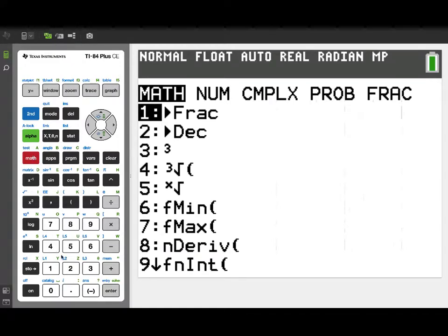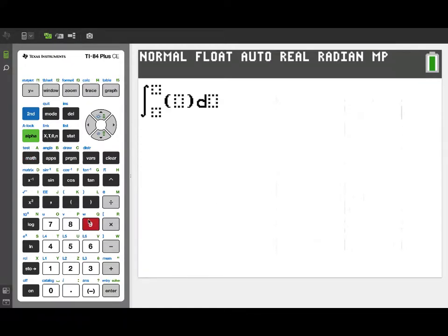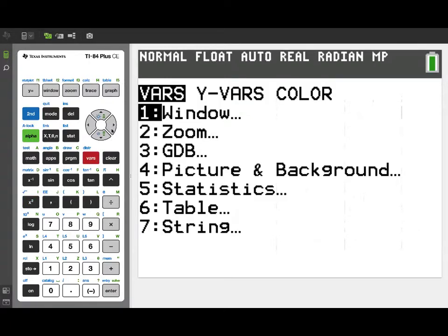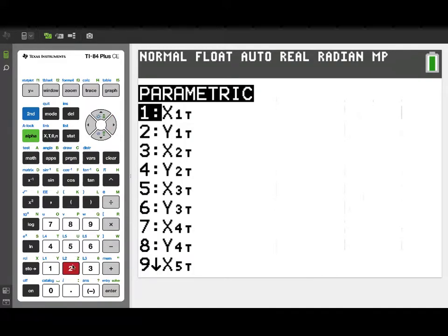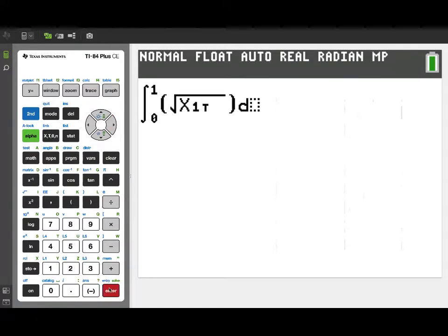That was to calculate the total distance the boat traveled over the time interval from 0 to 1. To do that, we'll get a definite integral using f int from the math menu. Our interval is from 0 to 1. But what we'll need to do is integrate the speed of the boat over that time interval. Since we have the components of the velocity, we can use those to create a speed function in our integrand.